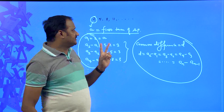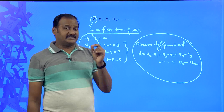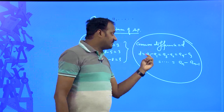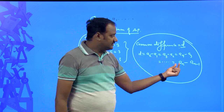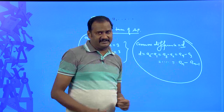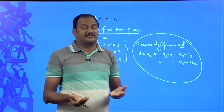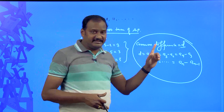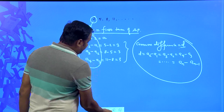These two things are very important in arithmetic progression: the first term, indicated by small 'a', and the common difference, indicated by 'd'. The common difference d equals a₂ minus a₁, or a₃ minus a₂, or aₙ minus aₙ₋₁. With the help of 'a' and 'd', let us now form the general form of an arithmetic progression.